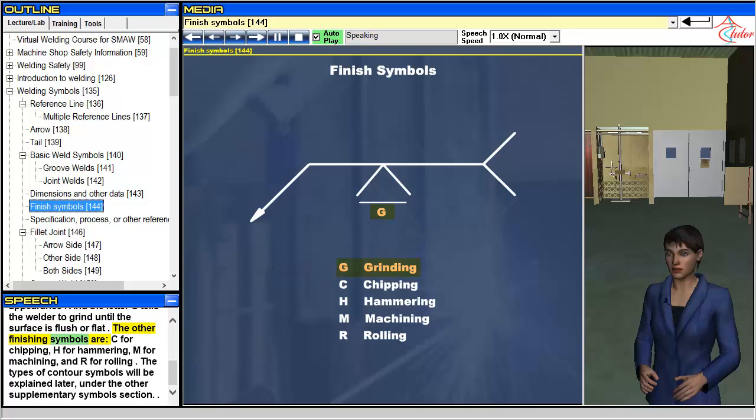The other finishing symbols are C for chipping, H for hammering, M for machining, and R for rolling. The types of contour symbols will be explained later, under the other supplementary symbols section.